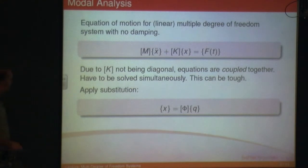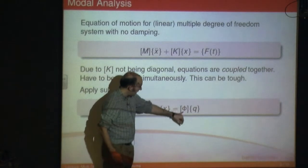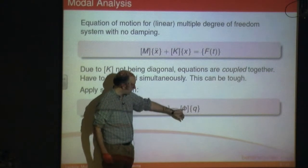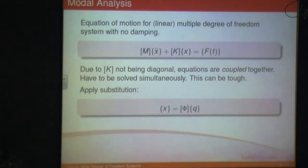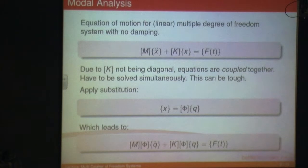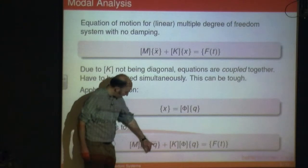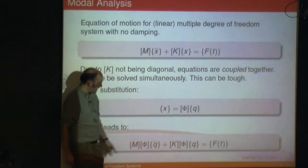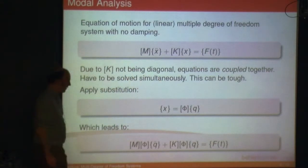The way we start with modal analysis is we apply this substitution: x equals φ, which is a matrix — a modal matrix, which we'll find in a minute — times q, where q is known as the modal coordinate or modal variable. We substitute that into our equation of motion and we end up with M·φ·q̈ plus K·φ·q equals the force.